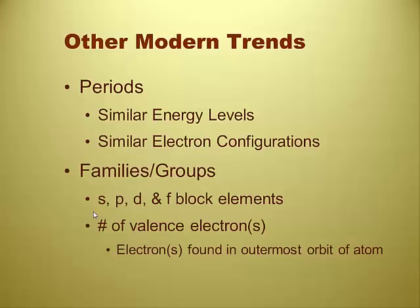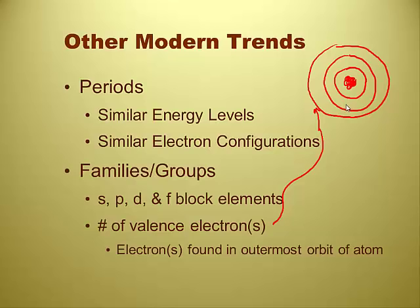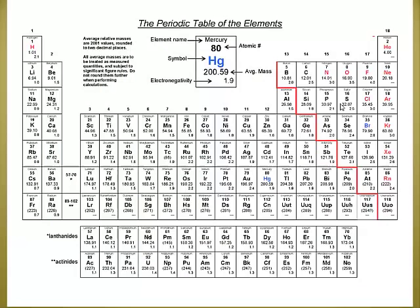Finally, we can talk about the number of valence electrons. If we draw a model of an atom, here's the nucleus with lots of protons and neutrons. According to our model of the atom, there are orbits that electrons are in. The outermost orbit has the valence electrons. The inner orbits have electrons in them but we don't call them valence electrons — they're called core electrons, or kernel electrons. Group one has one valence electron — every single one of them, no exceptions.